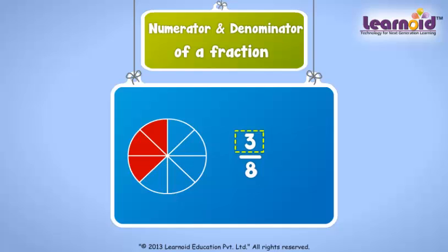Parts colored are 3, so numerator is 3. Total parts of the circle are 8, so denominator is 8.